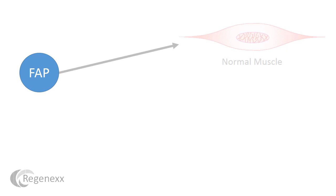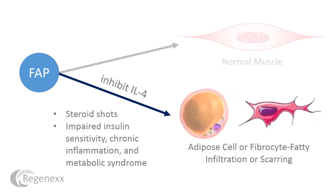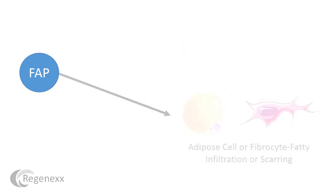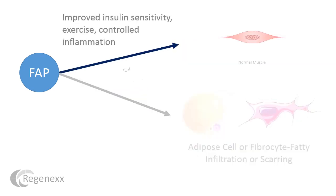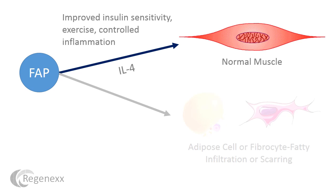What happens if your FAP cells are exposed to steroid shots, for instance, that inhibit IL-4, or if a patient has impaired insulin sensitivity, chronic inflammation, and metabolic syndrome? Then you get fatty atrophy or scarring atrophy of the muscles. On the other hand, if you've got a patient who has good insulin sensitivity, who exercises and controls their inflammation, and they express normal levels of IL-4, you'll get normal muscle.